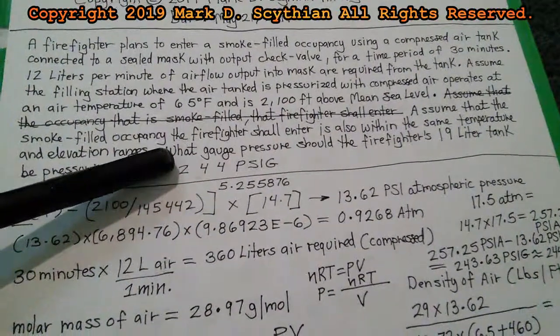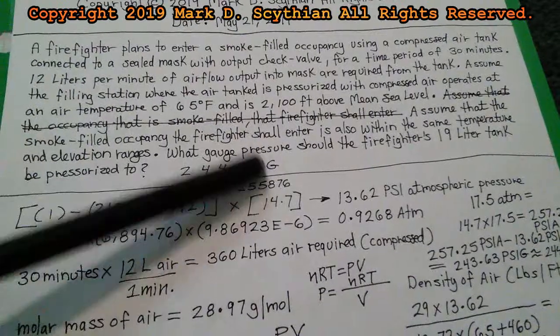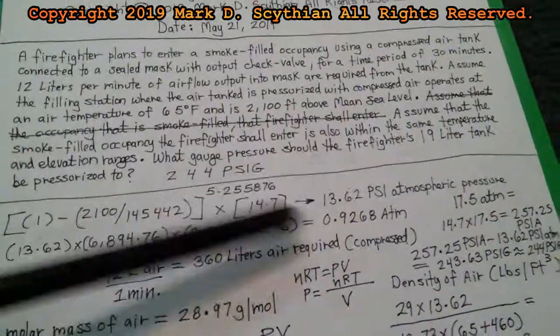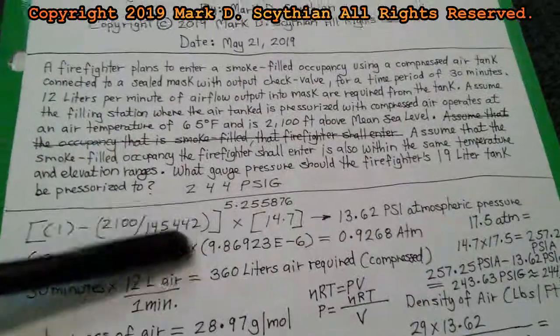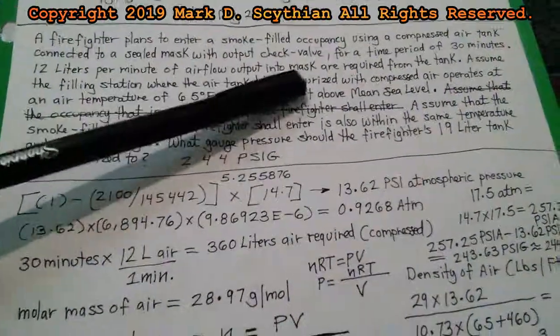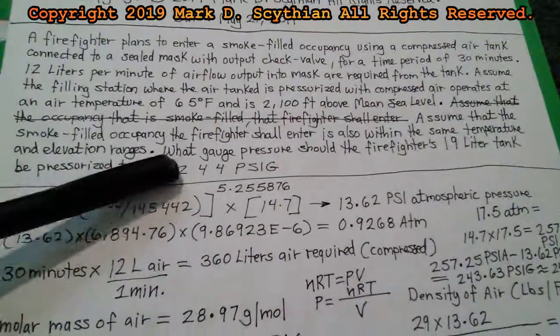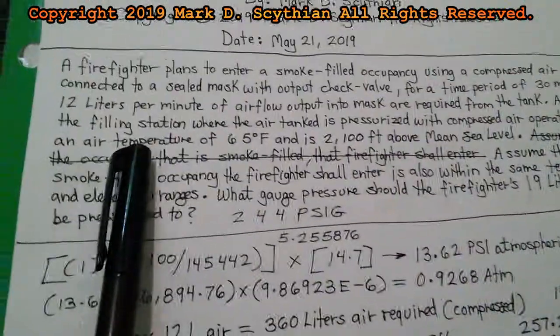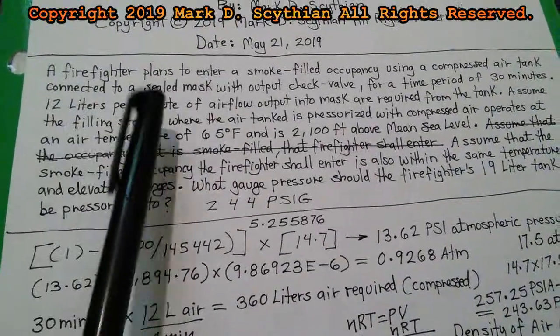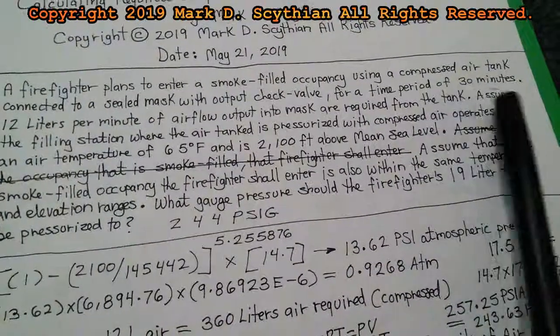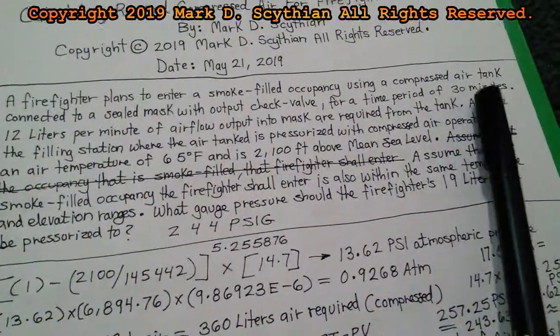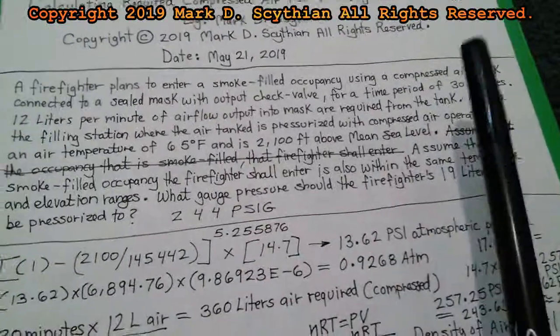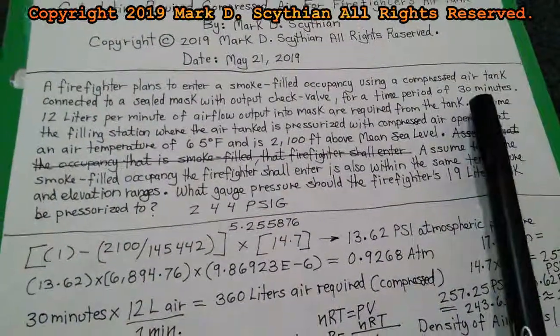At atmospheric pressure, without any pressurization or compressed air, it would be 0 PSI A. You would only have an atmospheric pressure of 13.62. That's the residual volume. Now, you start pressurizing. You start putting the compressed air at the filling station. This PSI gauge pressure will start to rise. If you pressurize it up to 244 pounds per square inch gauge of compressed air, you will have availability of 12 liters per minute of airflow into a mask for a time period of 30 minutes. Until all the compressed air charge above atmospheric pressure depletes out, and then you're left with 0 gauge pressure right at the end of approximately 30 minutes.